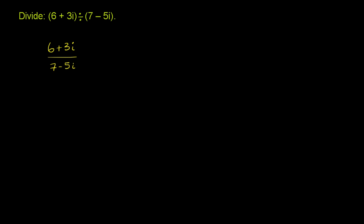So let's do that. Let's multiply the numerator and the denominator by the conjugate of this. So 7 plus 5i. 7 plus 5i is the complex conjugate of 7 minus 5i. So we're going to multiply it by 7 plus 5i over 7 plus 5i.